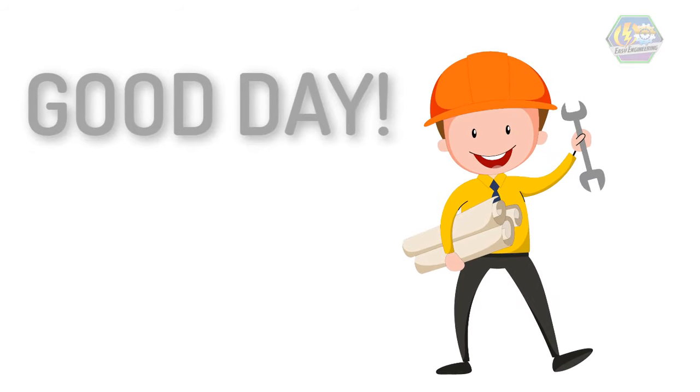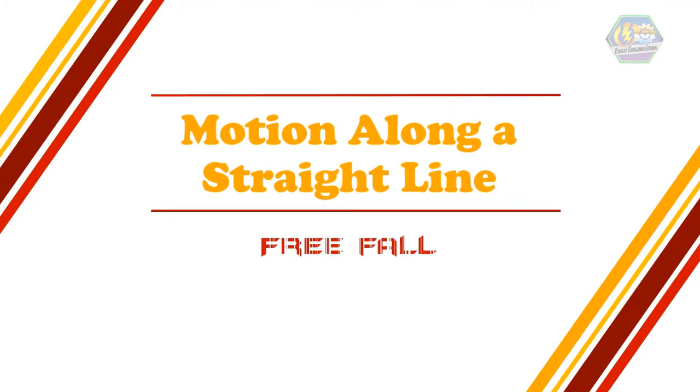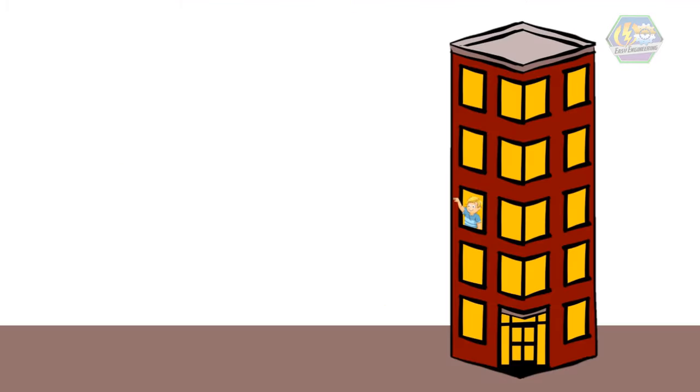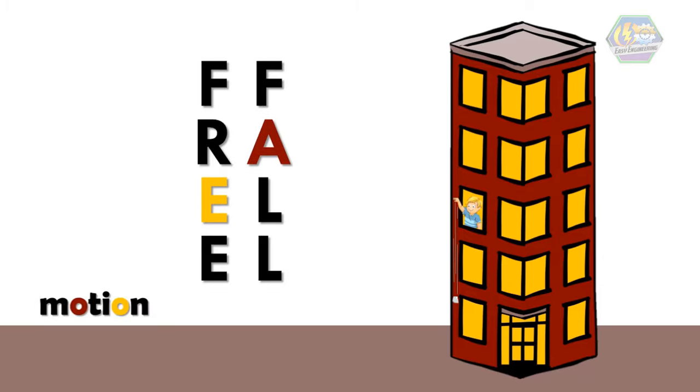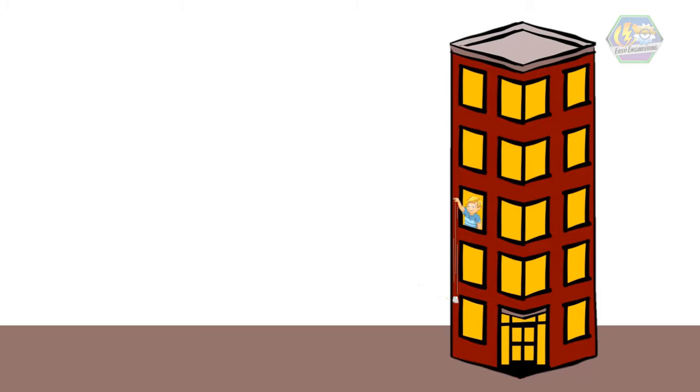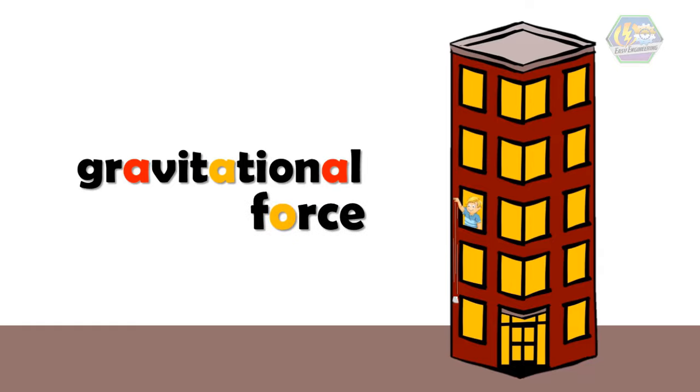Good day learners, this is Easy Engineering. This time we're going to talk about motion along a straight line: free fall. Whenever you drop a stone from a third floor building, it falls straight to the ground. This is an example of free fall motion. Whenever an object falls to the ground, we can say that the object is in free fall. This is caused by gravitational force. Today let us examine this kind of motion.